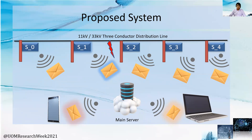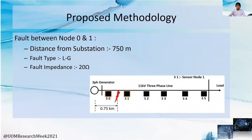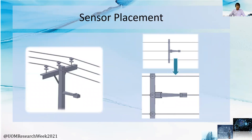Let me explain the finalized algorithms in the coming slides. For clarity of understanding, I'm going to demonstrate our methodology using an example fault condition. Here, the fault has occurred between sensor node 0 and sensor node 1. In our methodology, we confirmed the positioning of Hall effect sensors such that each sensor node has two Hall effect sensors placed perpendicular to each other in a horizontal plane.